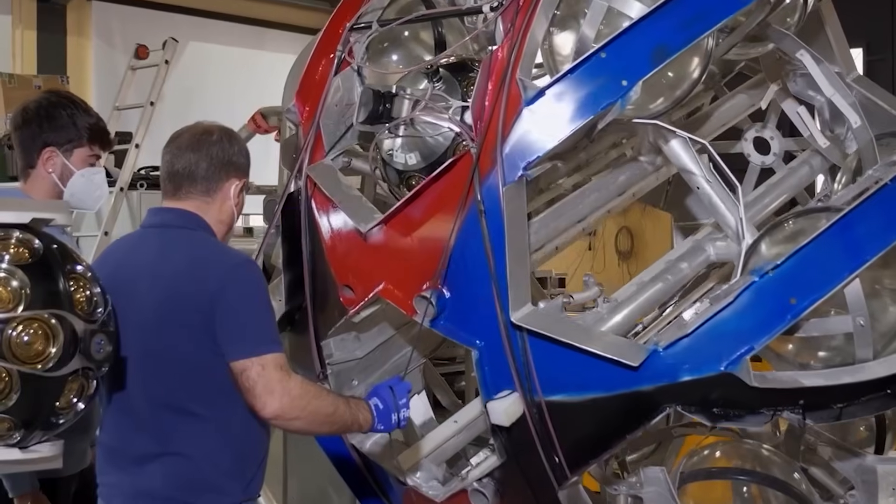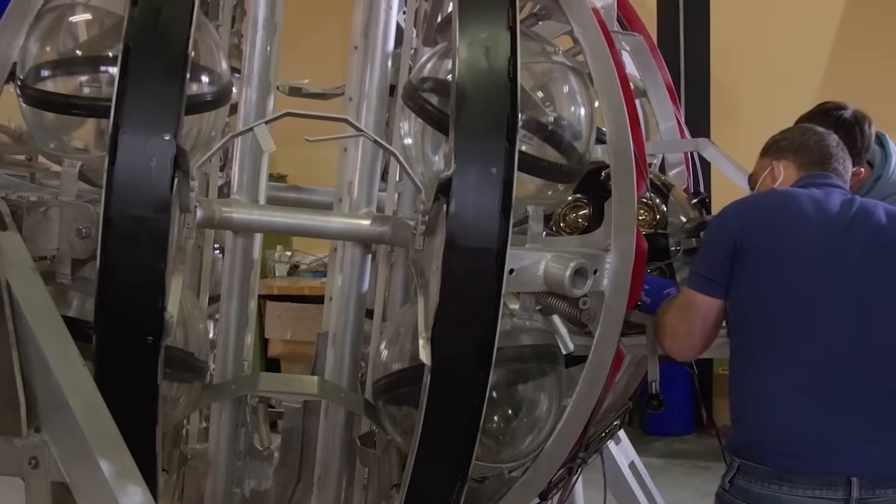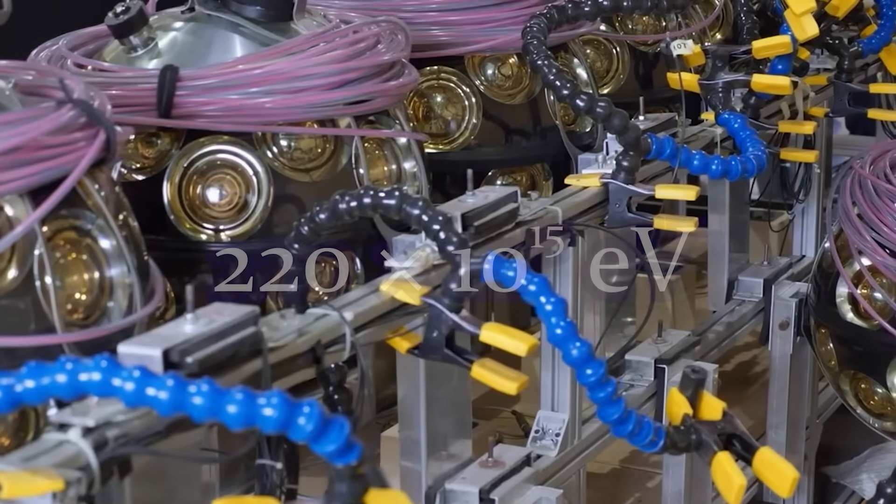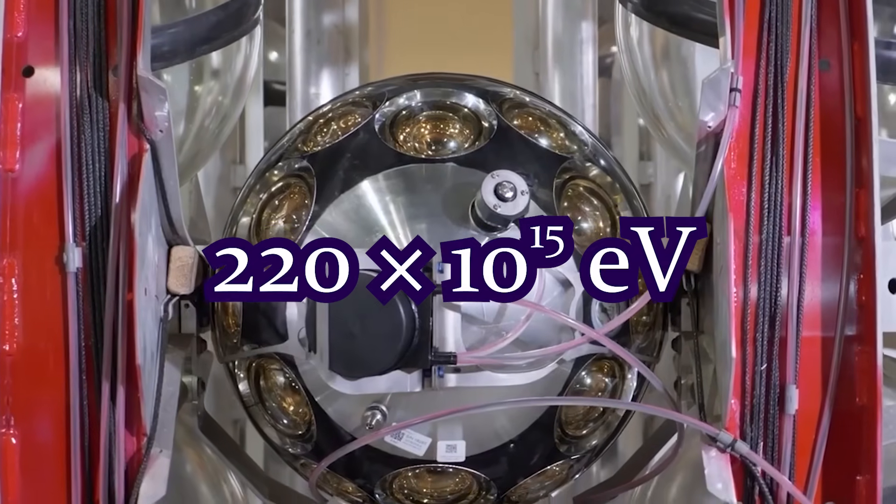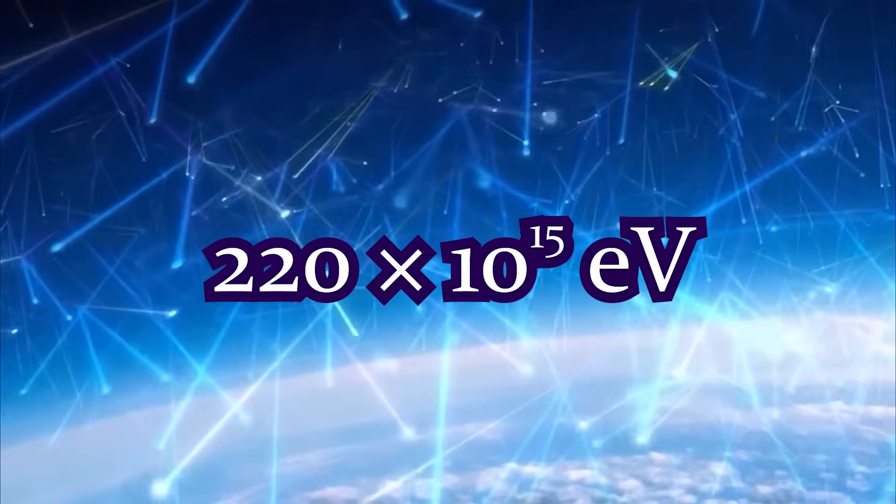Scientists at the KM3Net Neutrino Observatory have reported the discovery of a neutrino with an unprecedented energy of 220 peta-electron volts, which is two orders of magnitude higher than any neutrino ever detected before.